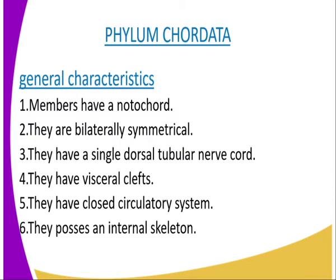The Phylum Chordata members include the fishes, the amphibians, the reptiles, birds and mammals. The term Chordata was derived from the term notochord, whereby the notochord is a long, flexible, rod-like structure found in chordates. In some members, this structure persists even in adulthood. In the vertebrates, this exists only in the embryonic stages of development. It is replaced by a vertebral column in later stages of embryology. The Phylum Chordata includes both types — those in which the notochord persists and also those in which the notochord does not persist.